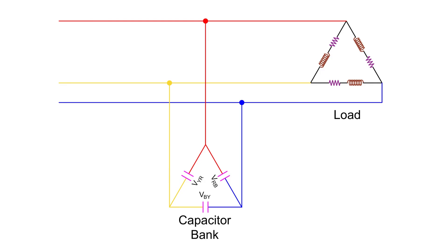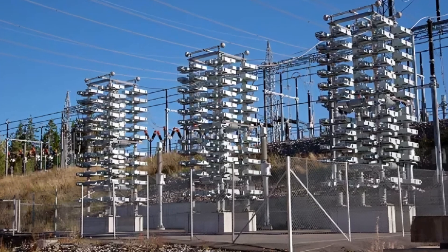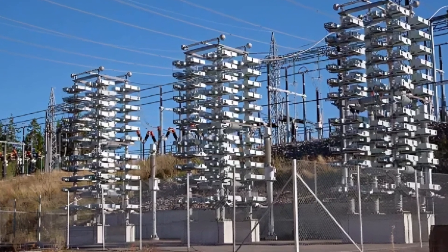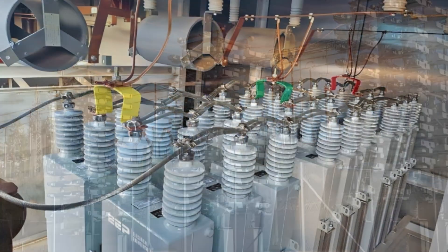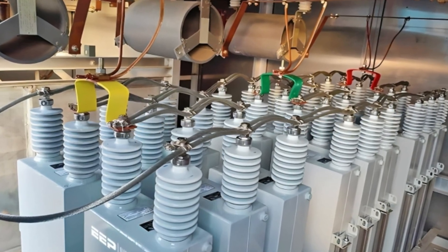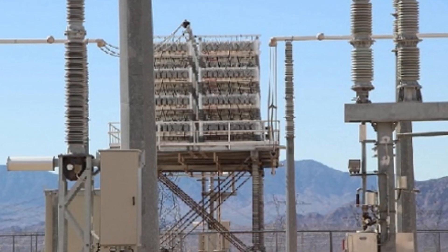So the delta connection is simply more efficient when it comes to power factor correction. It allows each capacitor to operate at full line voltage, maximizes reactive power output, and maintains better system reliability. The ability to continue operating even if one unit fails, and the elimination of the need for a neutral wire—both these features make delta the obvious choice in real-world capacitor bank applications. That's why in most practical systems, be it substations, industrial power factor panels, or utility networks, you'll always find capacitor banks connected in delta.